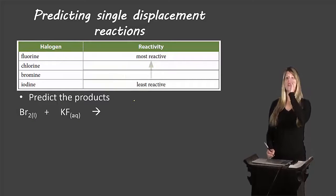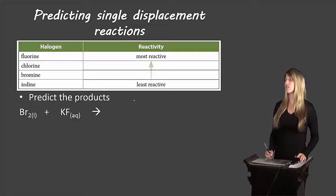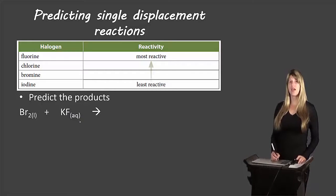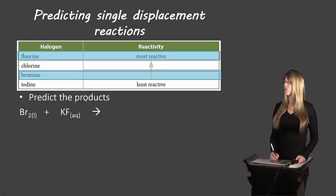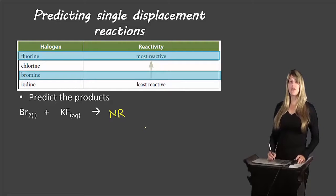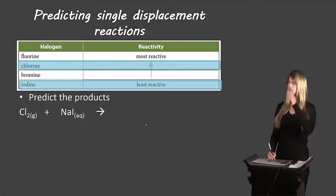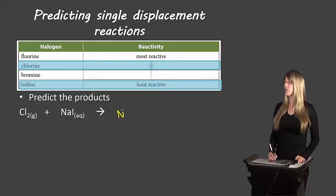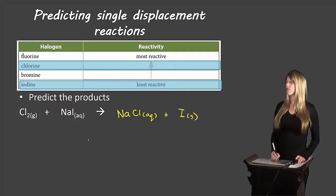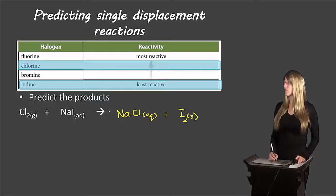Now looking at halogen displacement examples. First: bromine trying to displace fluorine in potassium fluoride. Bromine comes below fluorine on the halogen activity series, so it cannot displace it — no reaction. Second: chlorine and sodium iodide. Chlorine comes above iodine, so it can displace iodine. We end up with sodium chloride as an aqueous compound and I₂. Balancing gives us a balanced equation.